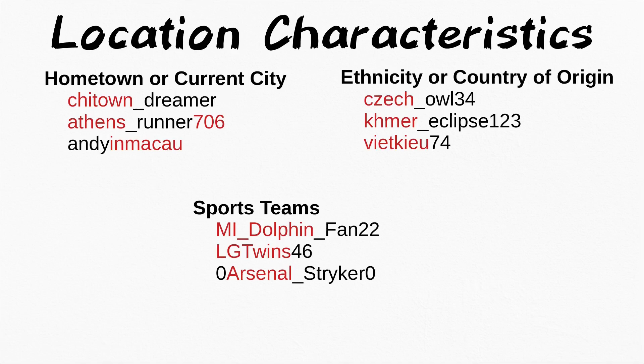One often overlooked category which might assist in geolocation is the presence of a sports team in a target's username. This is going to be hit and miss as effectiveness depends on how widely known the teams are. For example, simply being a Miami Dolphins fan doesn't mean your target lives in Miami, but it does increase the likelihood that they live in the United States, considering American football doesn't really have a large presence outside of the US. We can make similar assumptions of someone with a username referencing the South Korean baseball team, the LG Twins, but as Arsenal Football Club is known in many countries around the world, it wouldn't really help narrow down an area whatsoever — other than perhaps ruling out Fulham.